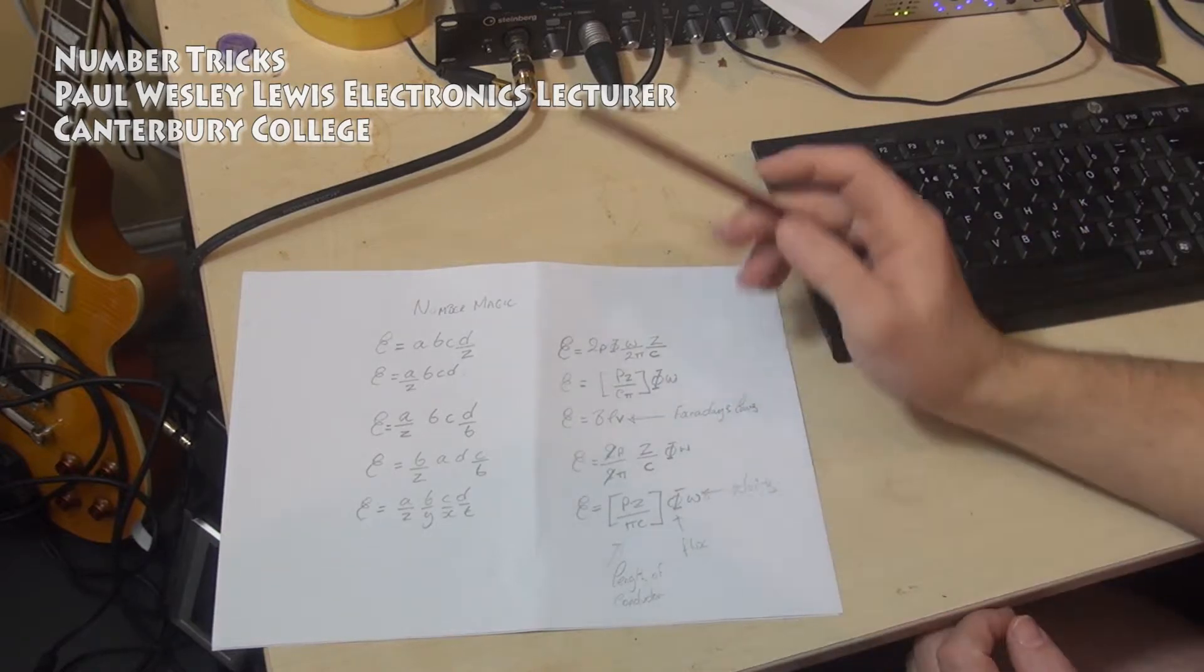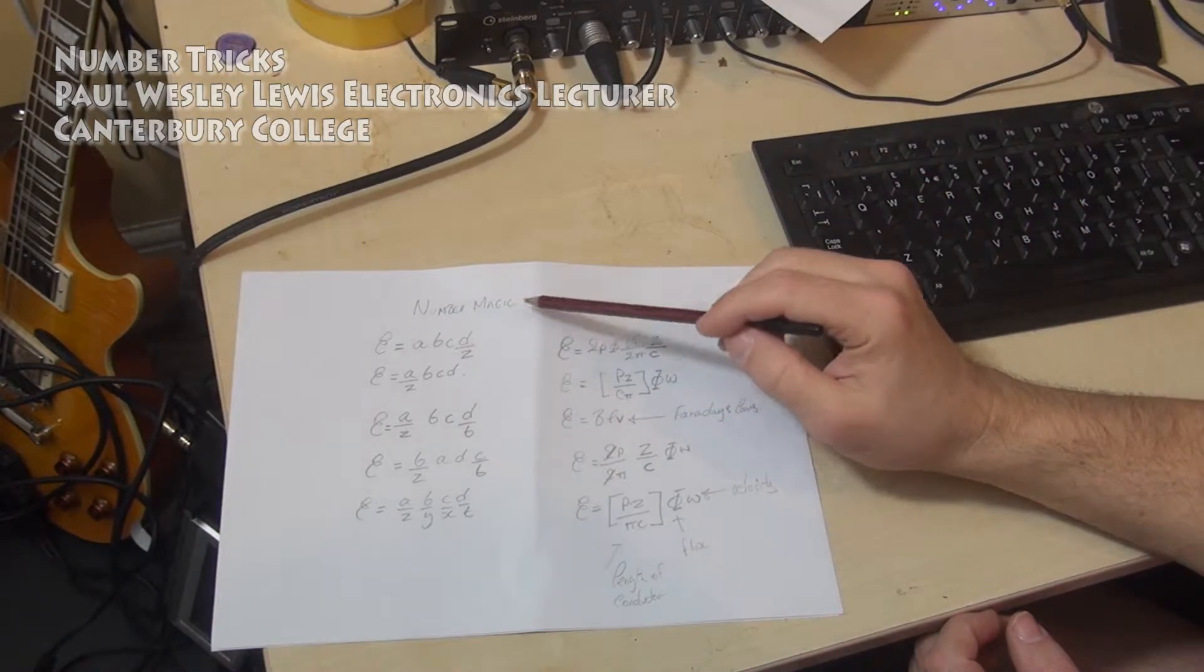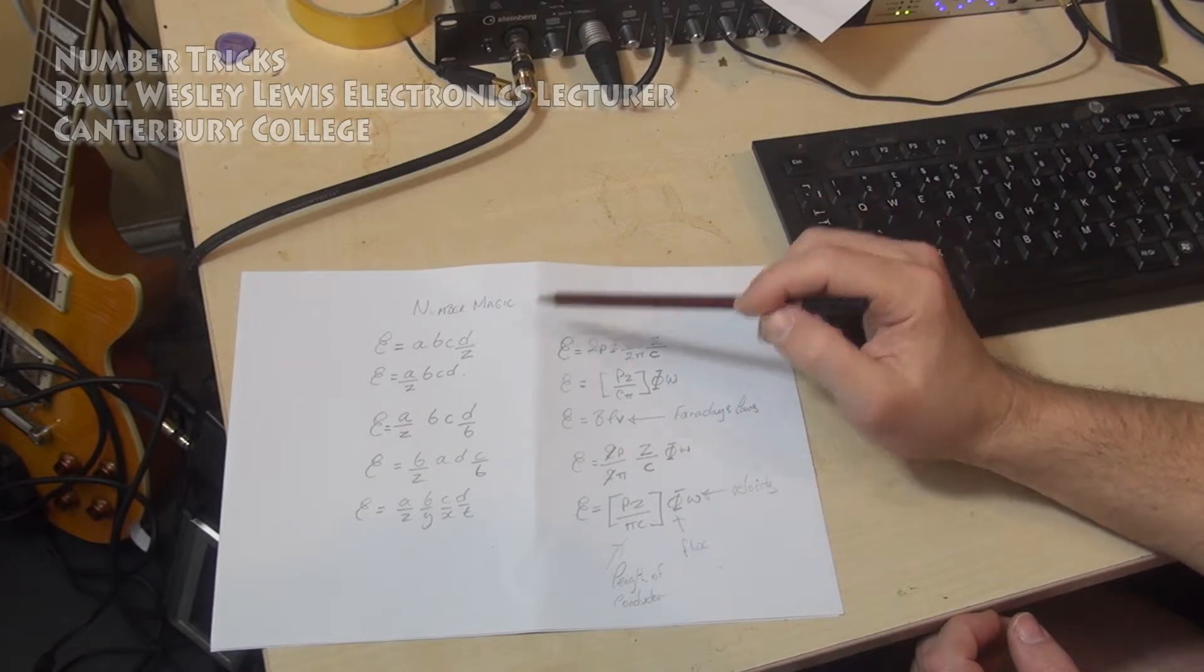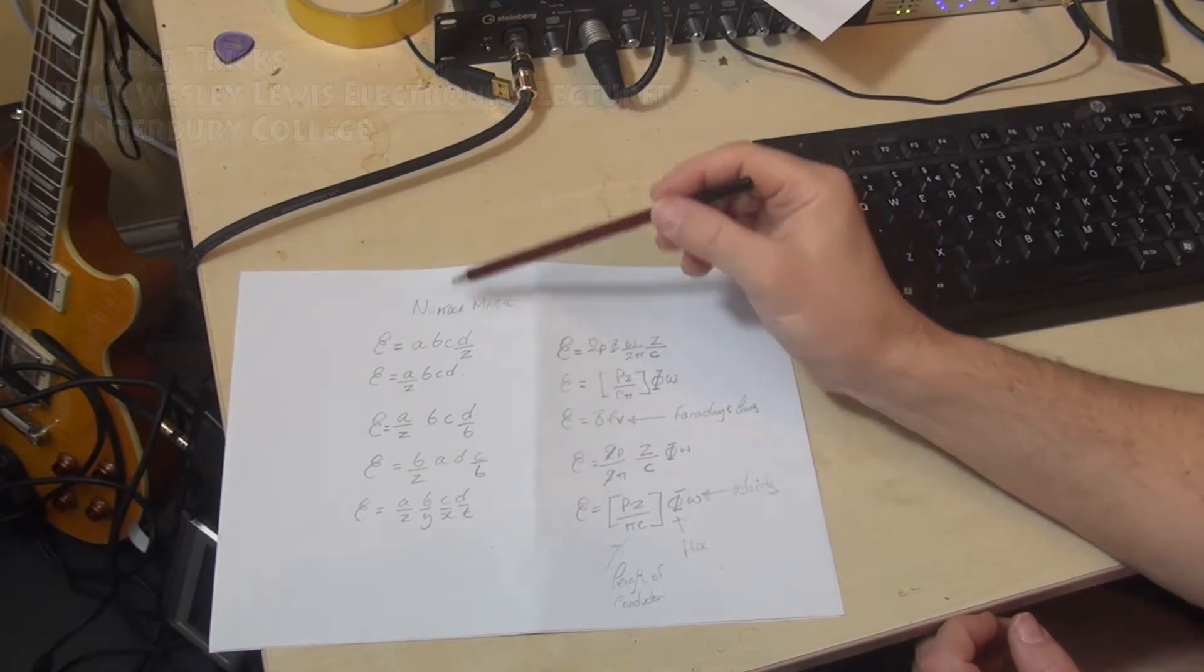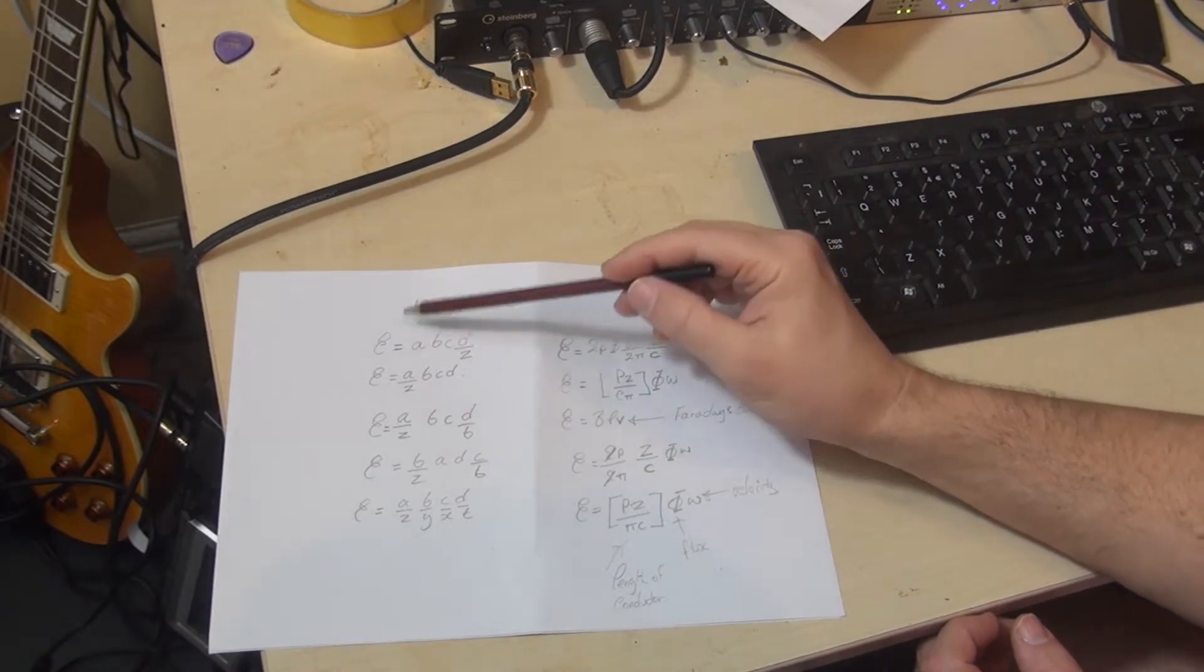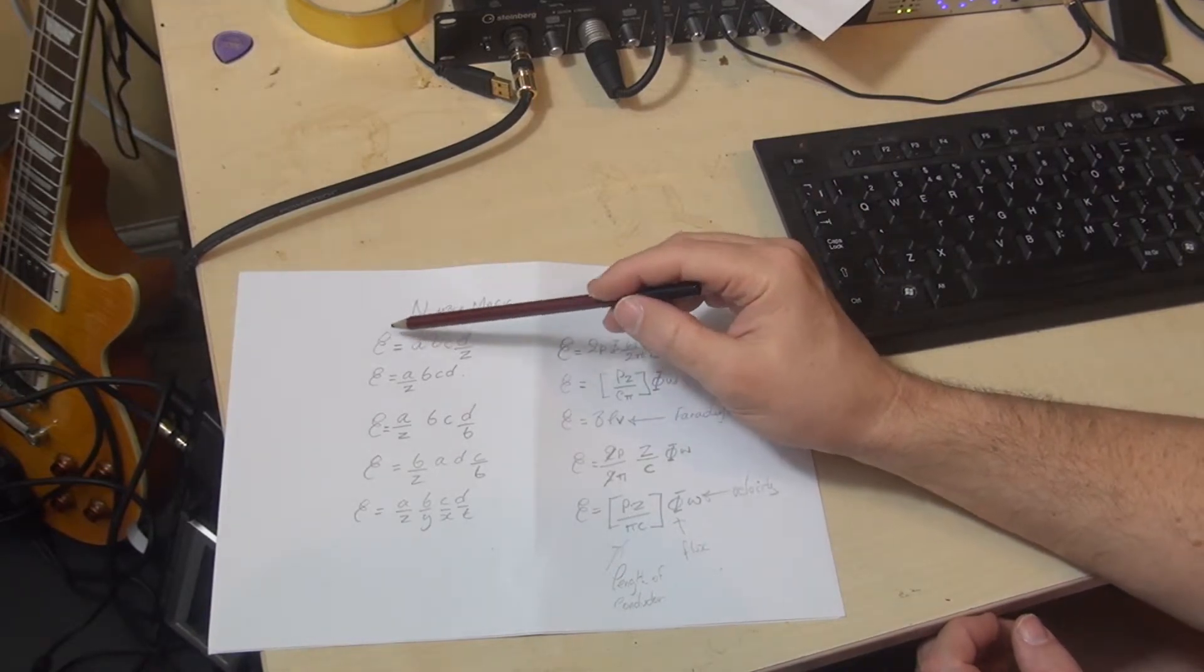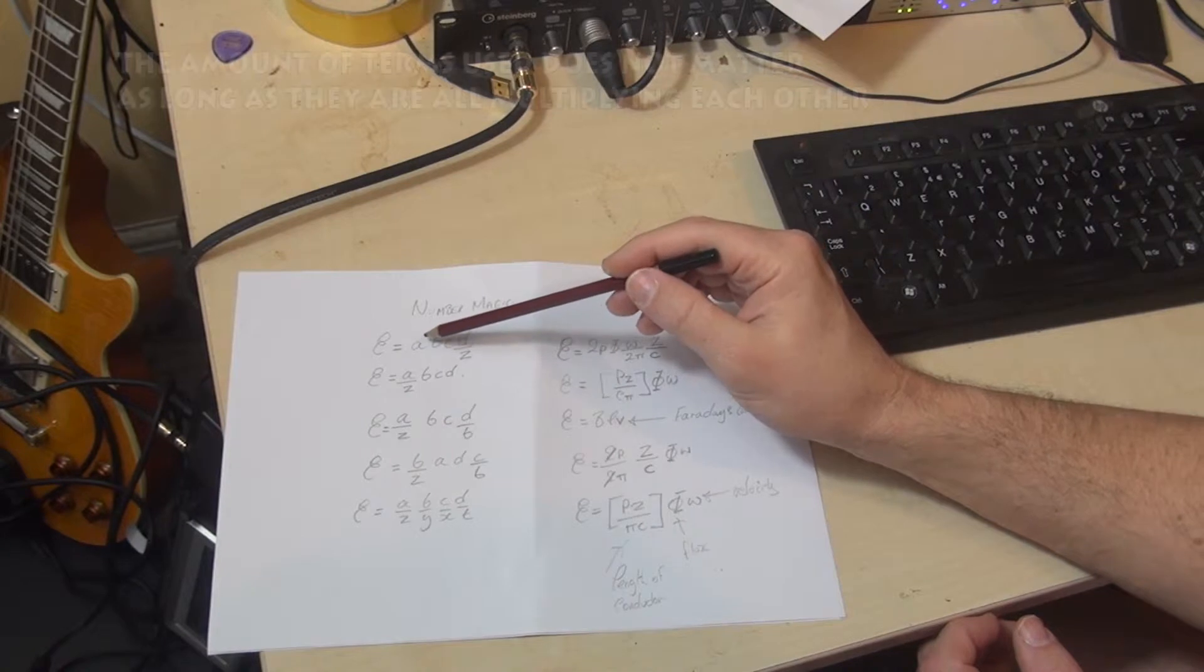Hi, I would like to just share a couple of little number magic tricks with you, which make the rearrangement of formula that bit easier. The first technique involves, we've got an equation here, E the subject, and four terms,